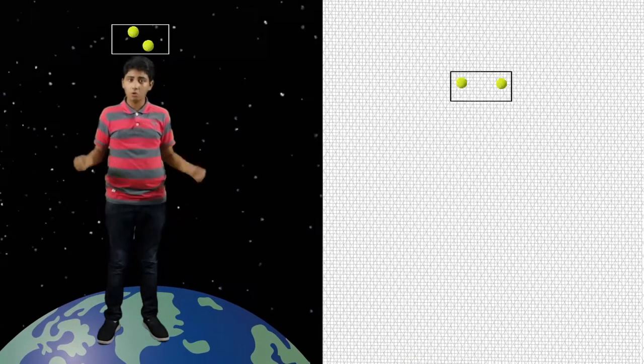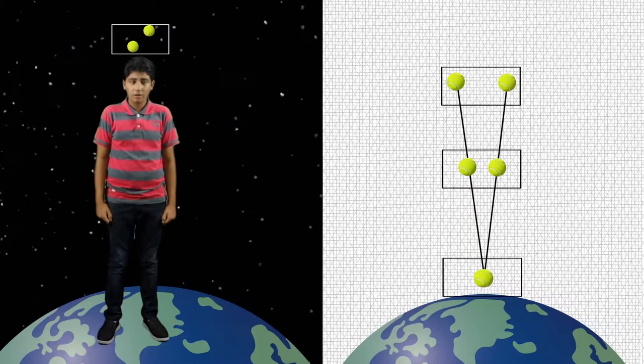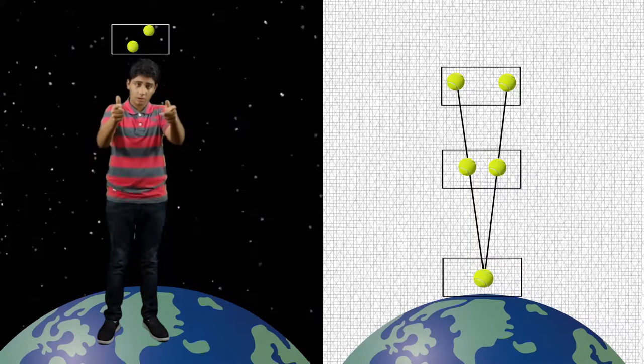Whereas in free fall, the two balls come closer. So does this mean that the laws of physics are different? To understand this, we need to take a closer look at gravity.